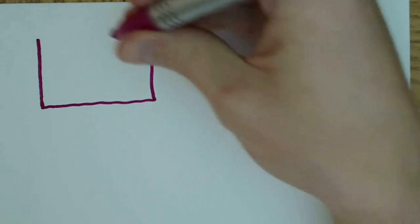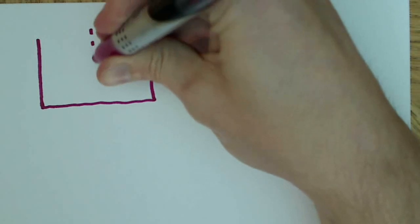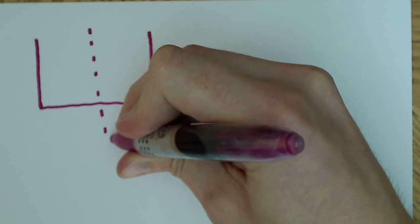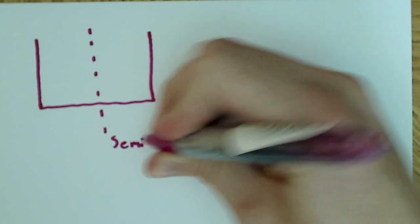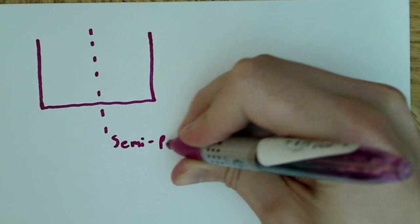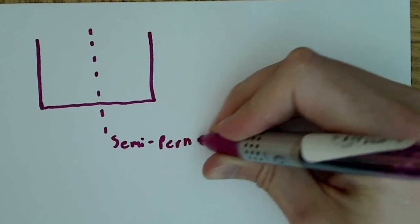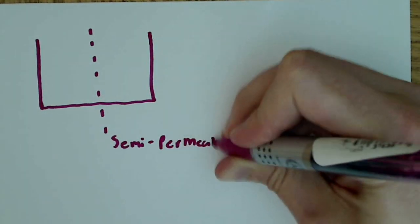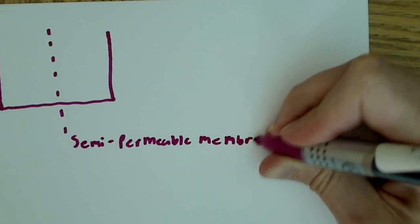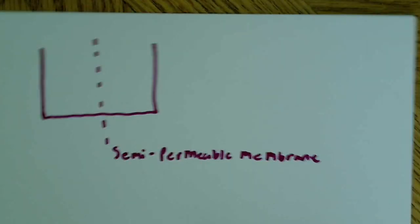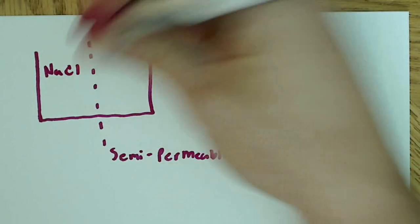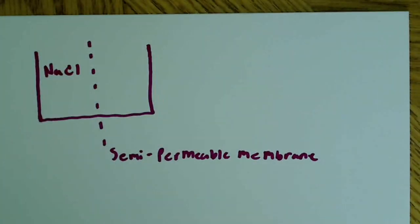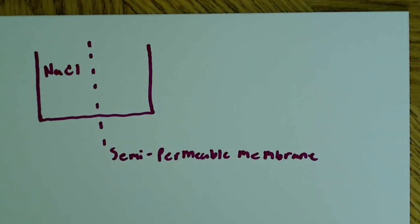So I have some container here, and it has some solution in it. And I have some semi-permeable membrane. So I have a container here with a solution of NaCl, sodium chloride on one side, and it's divided by a semi-permeable membrane here.